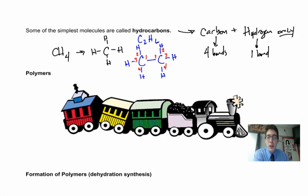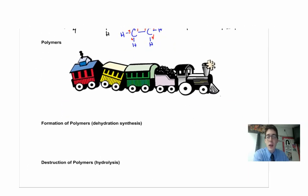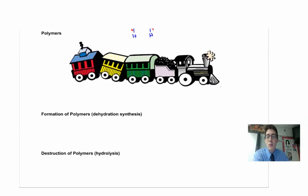So the question becomes, how do we get from CH4 to that molecule? There's a couple different ways we can do it. The first one we need to look at is making these things called polymers. Polymers are kind of like a train.